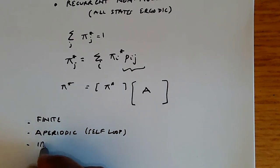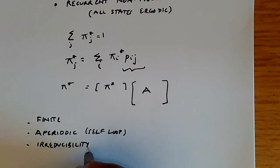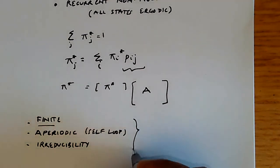And irreducibility, which means that we can go from every state to every other state. If these three conditions hold for a finite chain, then it's ergodic.